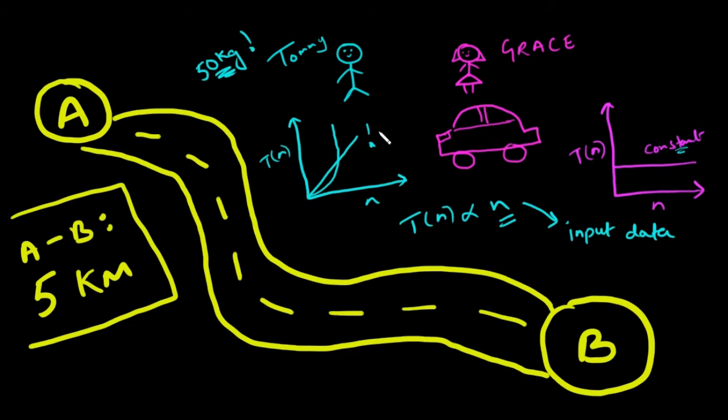This introduces us to something called order of growth or rate of growth. Order of growth is how the time of execution depends on the length of the input. In the earlier example we can clearly see that the time of execution linearly depends on the weight of luggage or in more suitable terms the size of data.